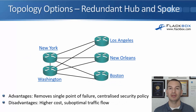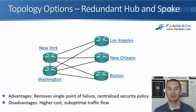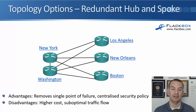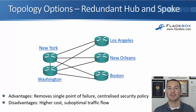The next option is a redundant hub and spoke, where we add an extra hub. In the example, it's the same as before, but now we've also got a hub site in Washington. All of the branches are connected to both New York and Washington. That second hub could be in a different city or even in the same location as the main hub. The main advantage is it removes that single point of failure — if we lose New York, all of the offices can still communicate via Washington. We also retain that centralized security policy, with traffic secured in both New York and Washington.